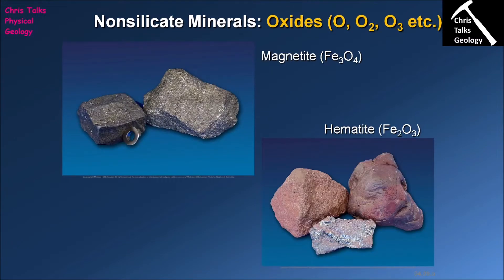The next class of non-silicate minerals we'll be looking at are the oxides. In the case of the oxides, we have a metal bonded exclusively to oxygen, and the amount of oxygen is variable — you can have a metal bonded to one, two, or three oxygen atoms. Here we have a couple of examples of common oxide minerals: magnetite and hematite. Both are iron oxide minerals. Magnetite is bonded to four oxygens and hematite is bonded to three oxygens.